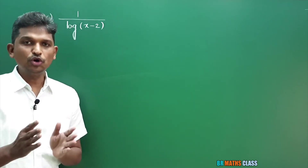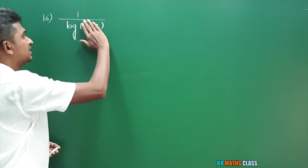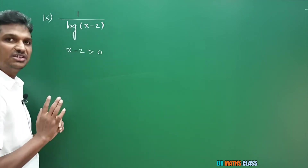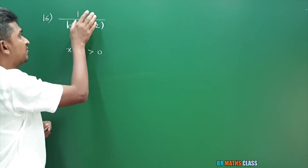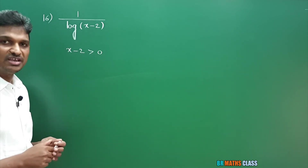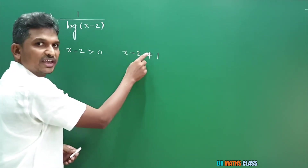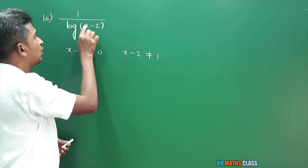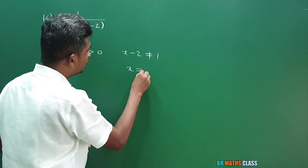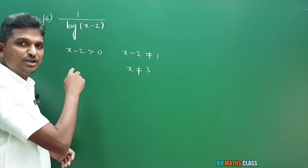Observe question number 16. We need to find the domain of 1 divided by log of (x-2). Since log is there, x-2 must be greater than 0. Also, since the function is in the form f/g, the denominator cannot be equal to 0. When x-2 = 1, log 1 = 0, making the denominator 0 and the function undefined. So x-2 ≠ 1, meaning x ≠ 3. If x = 3, then 3-2 = 1, denominator becomes 0.